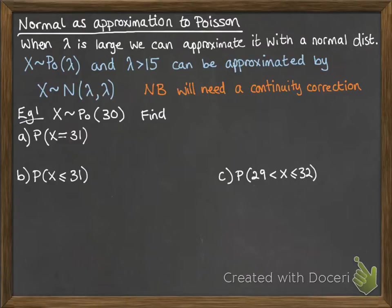Okay, so an example. x follows a Poisson distribution with lambda 30. We want to find the following probabilities. So the first one, the probability to x equals 31. We can just work that one out straight away. We don't need any approximation.